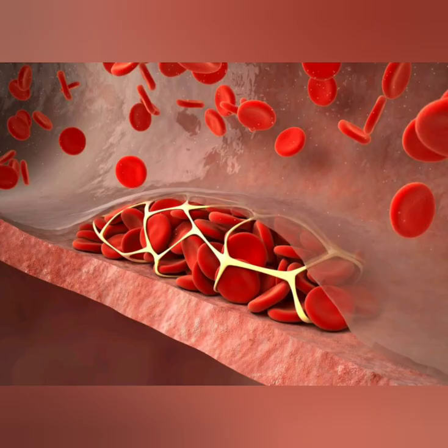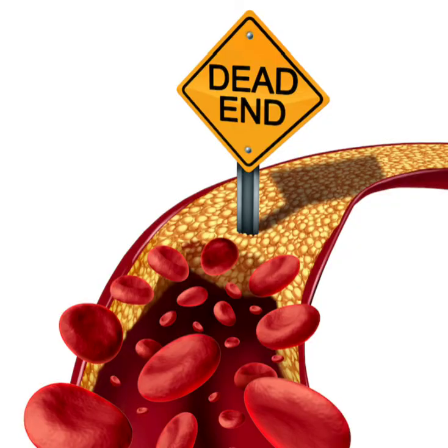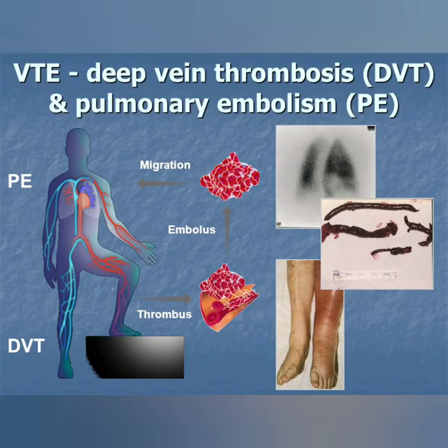Why do blood clots form? The body creates blood clots to help stop bleeding and heal wounds. For example, scabs are blood clots on the skin that form to stop bleeding from a cut or injury. Clots also form when we have injuries inside the body.